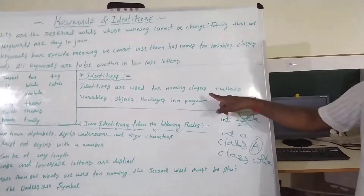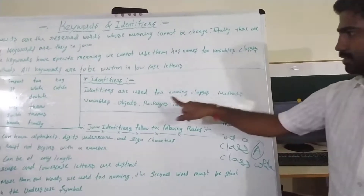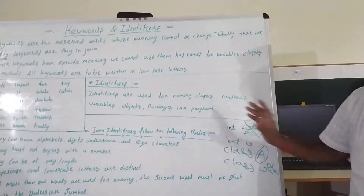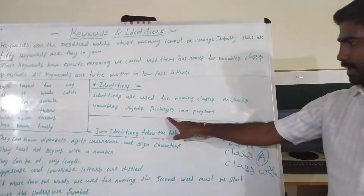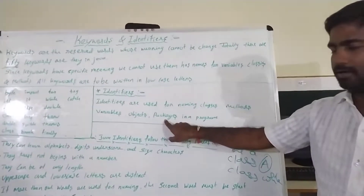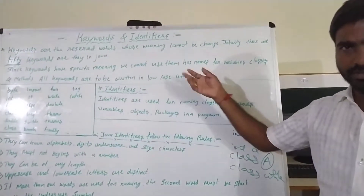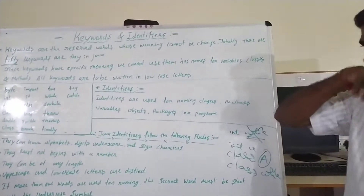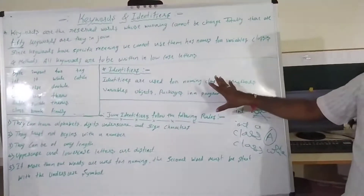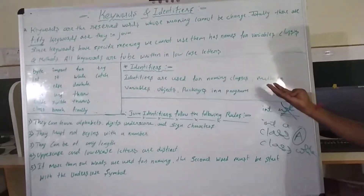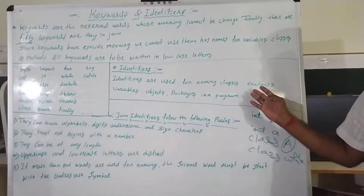Identifiers are used for naming classes, methods, variables, objects, and packages in a program. A package is a group of classes and methods. These are the elements we name using identifiers.